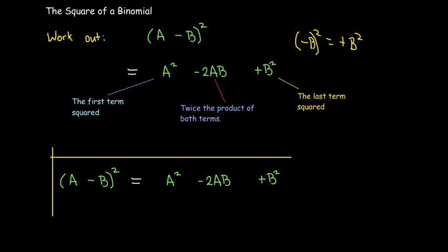Now, if I had A minus B squared, so my first term is A, and my second term, I think of that as being negative B. So I'm still going to have the first term squared, so A squared, twice the product of both terms. Well, if I take the product of A times negative B, I would get negative AB.